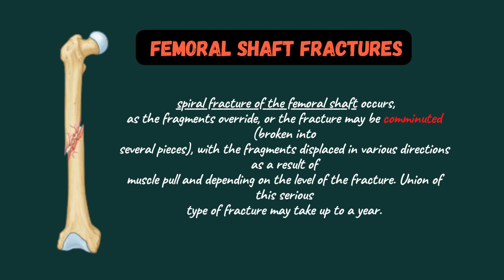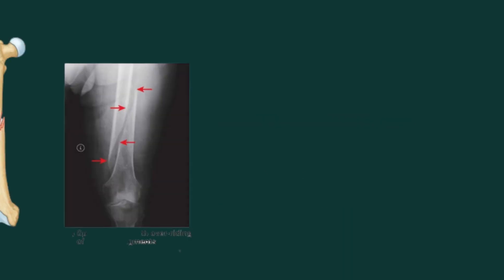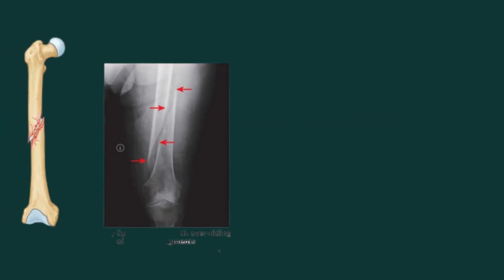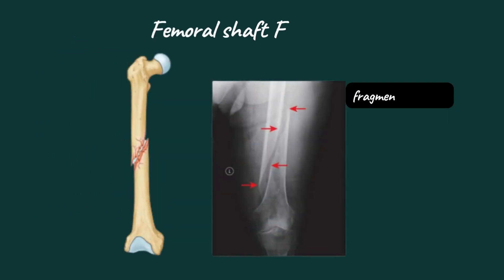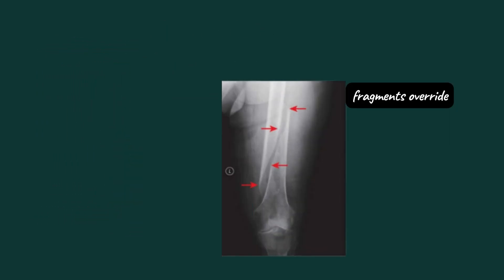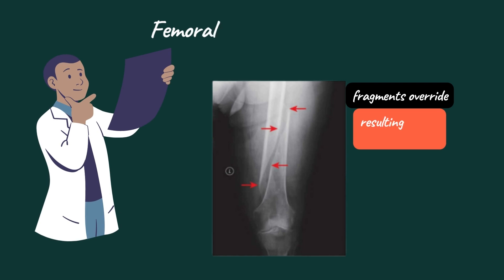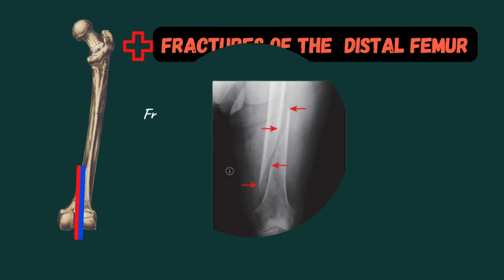Depending on the level of the fracture, union of this serious type of fracture may take up to a year. Here you can see a diagram as well as a radiograph of a patient having femoral shaft fractures, where you can appreciate fragments overriding resulting in limb foreshortening.